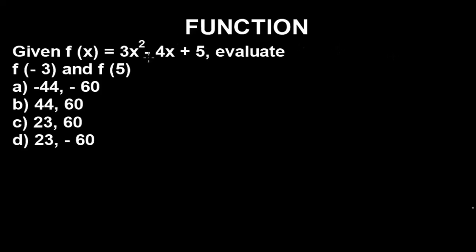The example I have here is: given f(x) equals 3x squared minus 4x plus 5, evaluate f(-3) and f(5). So what this actually means is that we have two values of x in this question, which are -3 and 5 respectively.